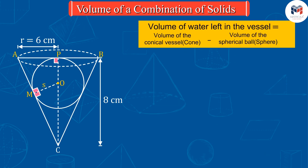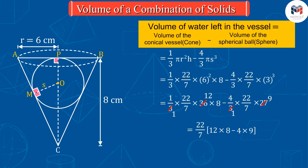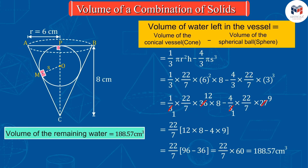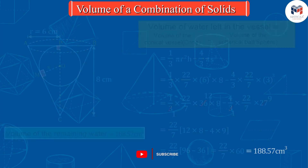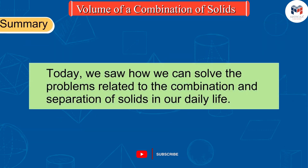Now let's find the volume of the cone and the sphere and solve further to get the volume of the remaining water, which is equal to 188.57 cubic centimeters. Today we saw how we can solve problems related to the combination and separation of solids in our daily life.